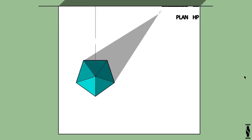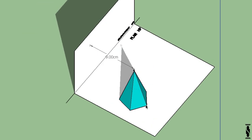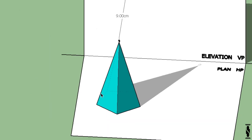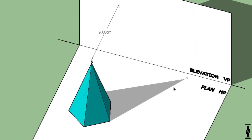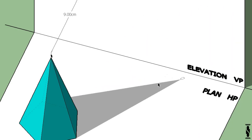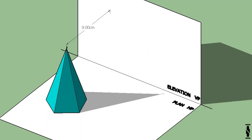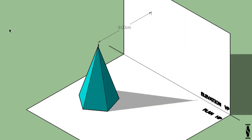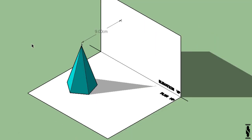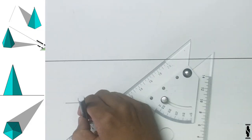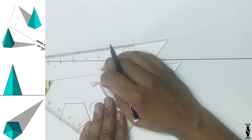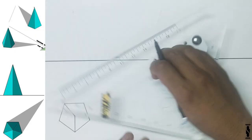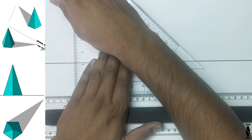First of all, take a look into the 3D representation. We can clearly see that the shadow profile is pyramidal in nature, starting from the base and finishing at the common point. Let's start with the drawing of basic orthographic projection as per the given condition.